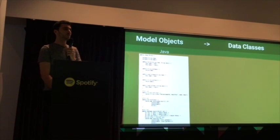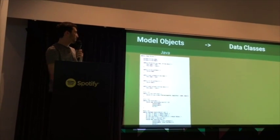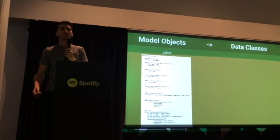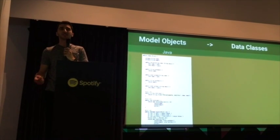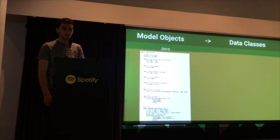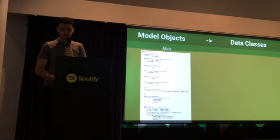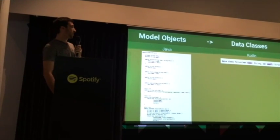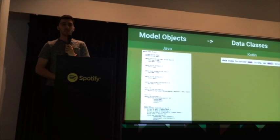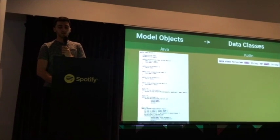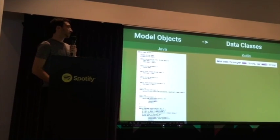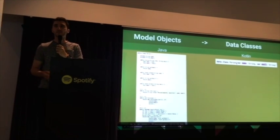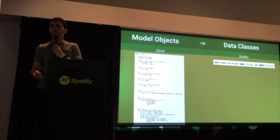I'm sure everyone's familiar with these kinds of classes in Java — private fields, constructor, getters, setters, all that stuff. In Kotlin you can achieve the same exact functionality in one line by using a data class. Here we basically have the primary constructor and we're passing in the fields, and Kotlin will generate the rest of the code for us.